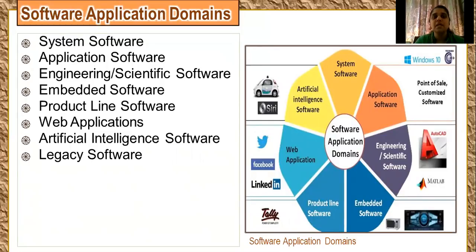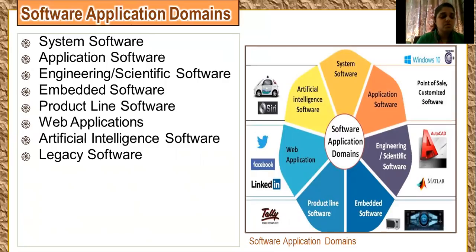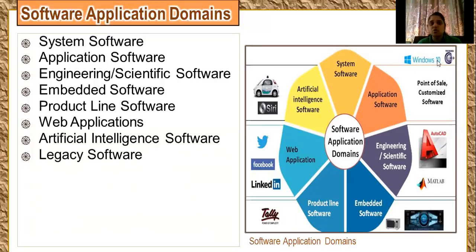We shall now move on to application domains. System softwares are the applications which provide a platform for other programs to execute. Examples of system software include Windows 10, which is your operating system, as well as editors and compilers.